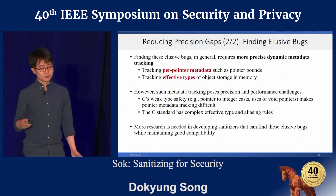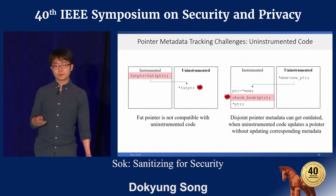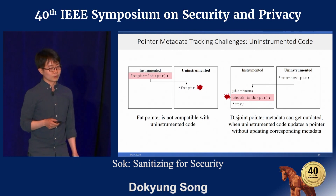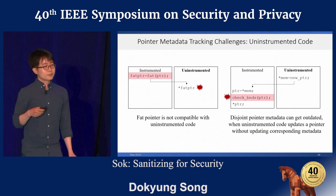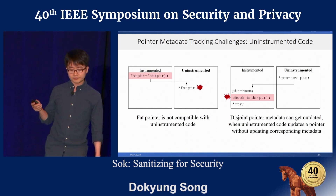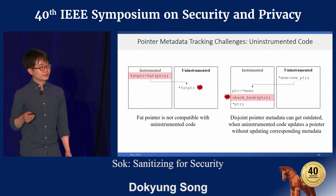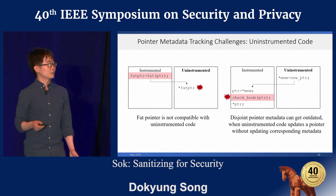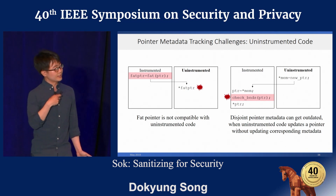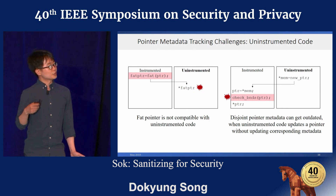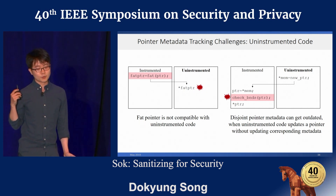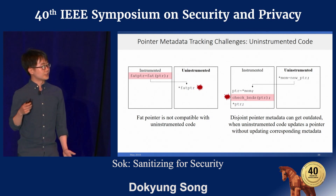Let me describe some of the challenges. First, uninstrumented code can cause problems for pointer metadata tracking. For example, the fat pointer technique is incompatible with uninstrumented code — if a fat pointer gets passed to uninstrumented code, the program can crash as the fat pointer gets dereferenced. On the right-hand side, maintaining metadata disjoined from original pointer values can be an option, but it can create another problem: uninstrumented code can update a pointer without updating its metadata, which can cause problems when the outdated metadata gets used in a sanitizer check.